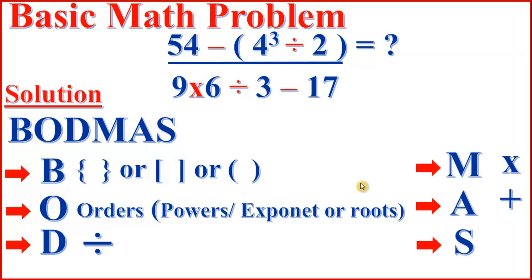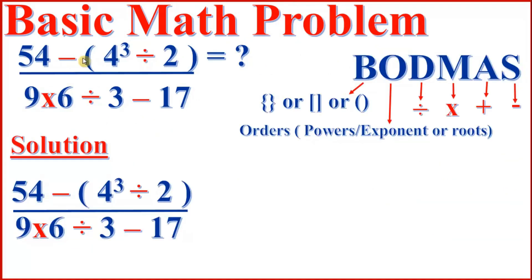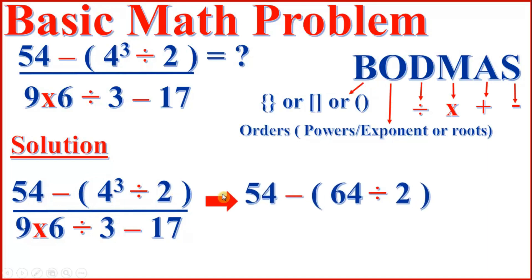In this mathematical expression there is a numerator and there is a denominator — they are two separate mathematical expressions. First we solve the numerator, then we solve the denominator. According to the BODMAS rule, we do the expression in the bracket first. The expression in the bracket is 4 to the power of 3 divided by 2, which means 54 minus parenthesis — 4 to the power of 3 equals 64 — divided by 2.